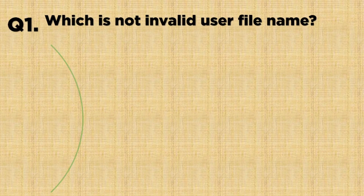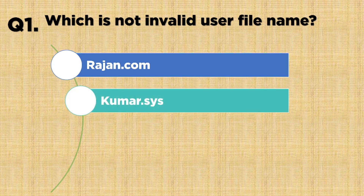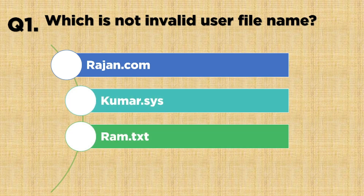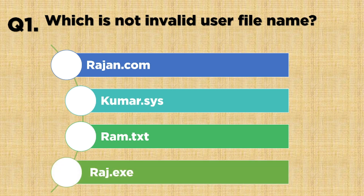Question number one: which is not an invalid user file name? Option A: rajin.com, Option B: umar.siyes, Option C: ram.txt, Option D: raj.exe. The correct answer is Option C: ram.txt.